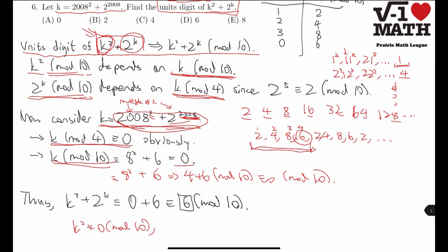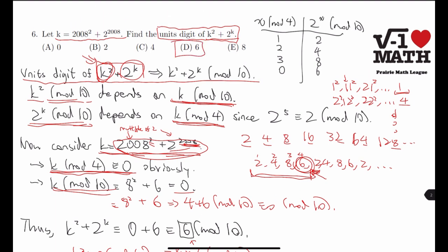Now, 2 to the power of k, notice that k mod 4 is 0, and as we just saw earlier, every 4th number in the 2 to the power of k mod 10 series is 6. Therefore, 2 to the power of k is congruent to 6 mod 10. And we can add these two up to get 6, which is option choice D. And we're done.